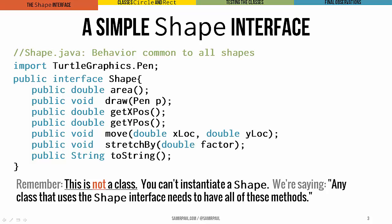Now remember, this is not a class. You can't instantiate a shape. All we're saying is that any class that implements this shape interface has to have these specific methods. They can have more, but it has to have at least these.